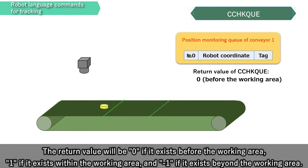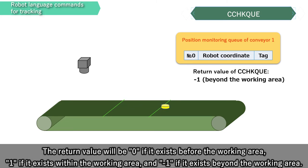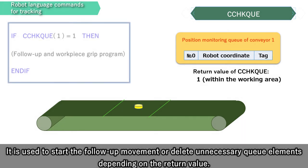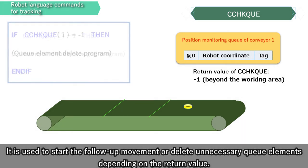The return value will be 0 if the element exists before the working area, 1 if it exists within the working area, and minus 1 if it exists beyond the working area. It is used to start the follow-up movement or delete unnecessary queue elements depending on the return value.